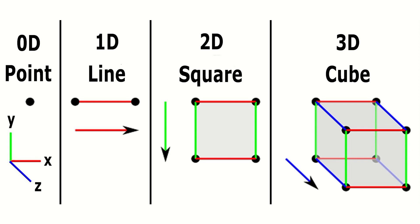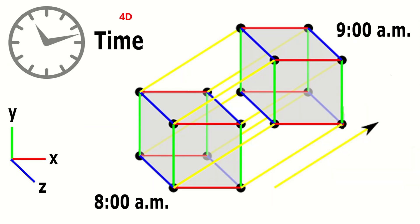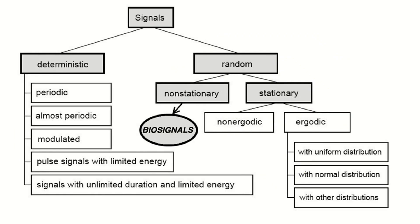One-D means only one variable is changing. Two-D means in two dimensions, x as well as y, the variables are changing. Three-dimensional means x, y, z — in three dimensions the variables are changing like a cube. If you add one more dimension like time along with x, y, z, then you can say it is a four-dimensional signal.